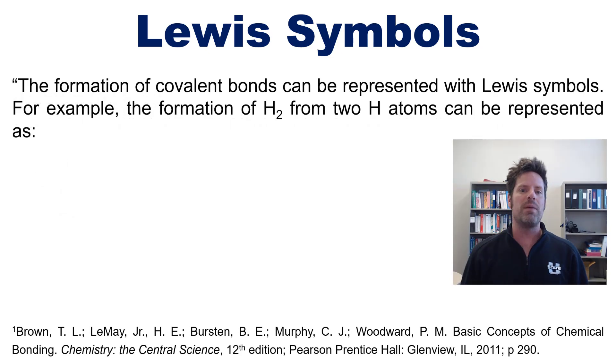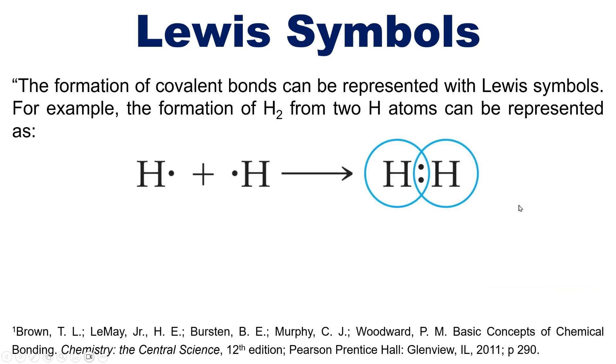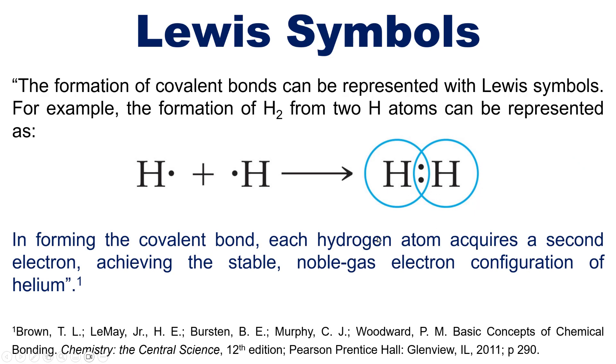The formation of covalent bonds can be represented with Lewis symbols. For example, the formation of an H2 molecule from two individual H atoms can be represented like this. Now you can see that in forming this covalent bond, each hydrogen atom acquires a second electron. That is, each hydrogen acquires an electron from the other. And then they share them so that they're able to achieve the stable noble gas electron configuration of helium, which has just a two tet.